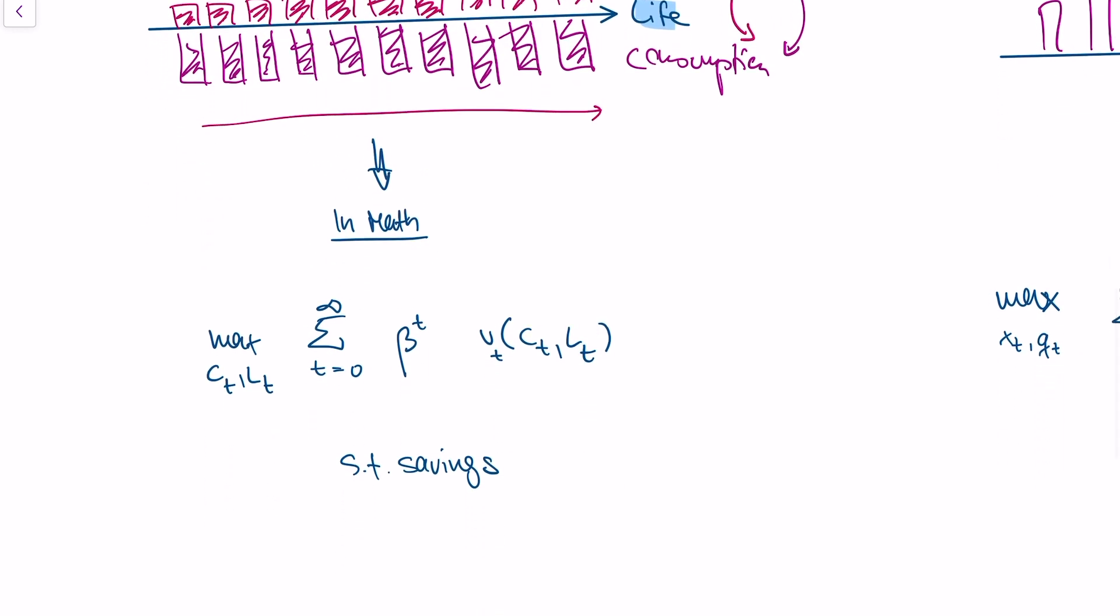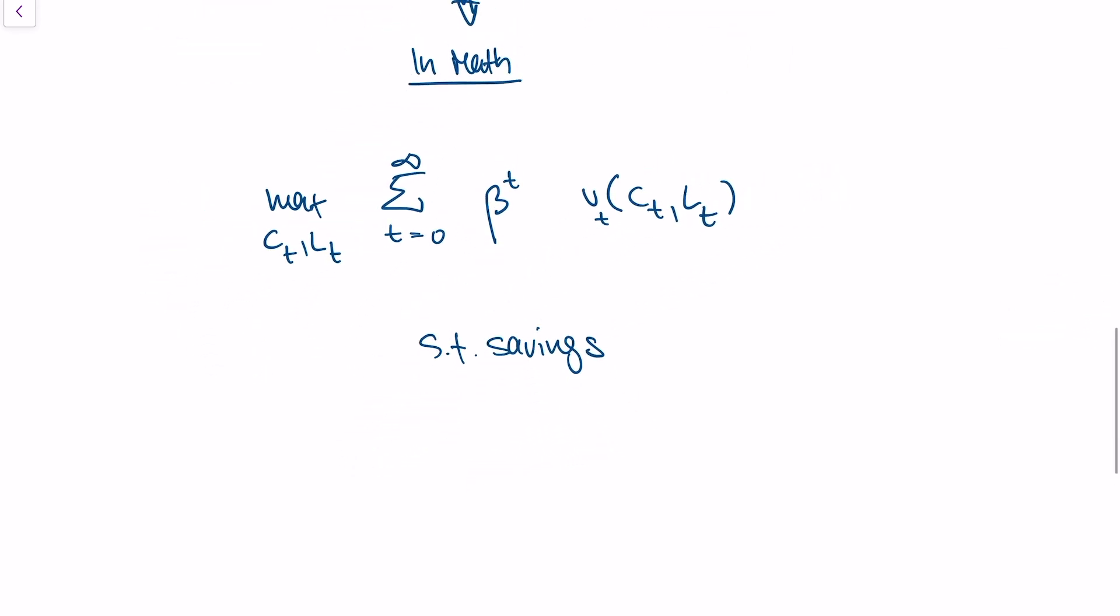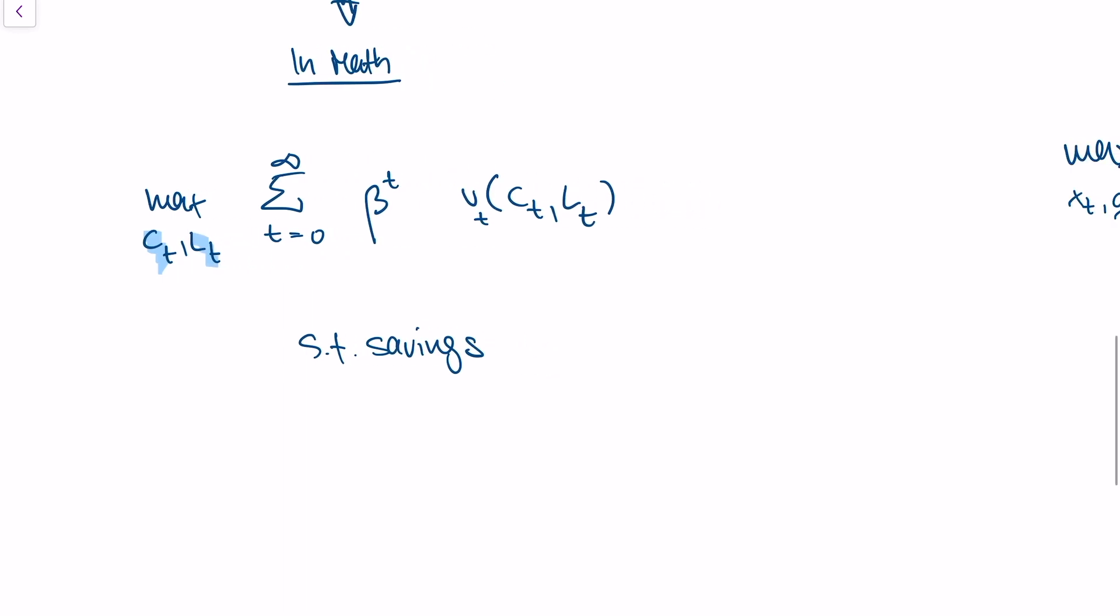How do we capture that in math? Well, in math, we just say we try to maximize by choosing consumption and leisure, C and L in every time period. We get utility from this. This utility function can be really simple - it can be, for instance, the log of consumption plus the log of leisure, as an example.